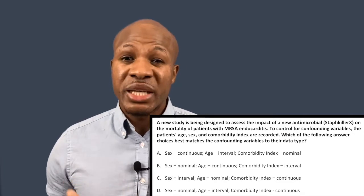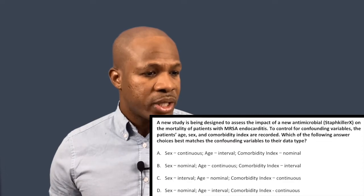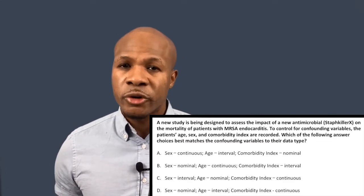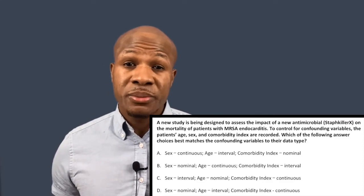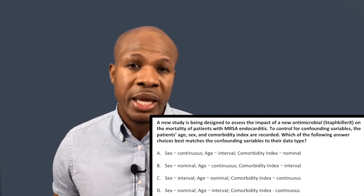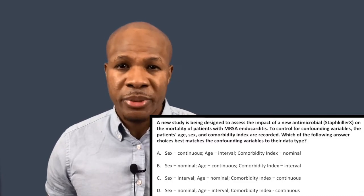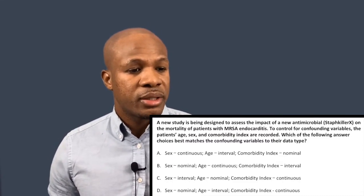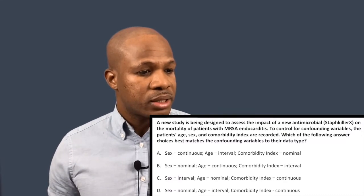Answer choice A says: sex is a continuous variable, age is an interval variable, and comorbidity index is a nominal variable. The biggest issue here is the comorbidity index being called a nominal variable. A nominal variable is just a name — purely categorical with no number attached. Comorbidity index has a number attached to it, so it can't be nominal. Answer choice A is wrong right off the bat.